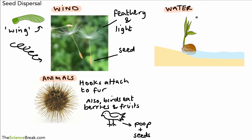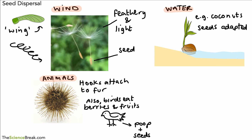We also have the use of water. Water is used for the kinds of seeds that can float. Here's an example — this is a coconut. You can gather from the diagram that it has floated on water, reached some land, and then started to grow, spreading it very far away from the parent plant. Any seeds that are water-dispersed are adapted to float.